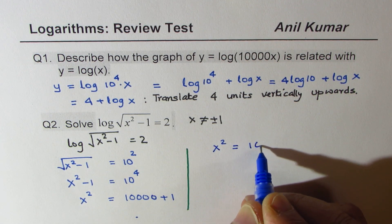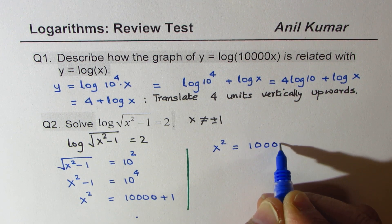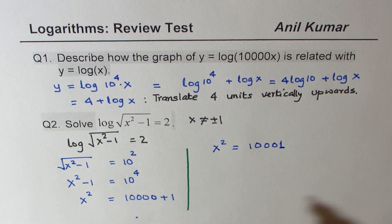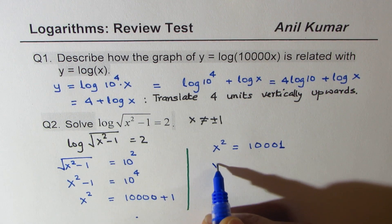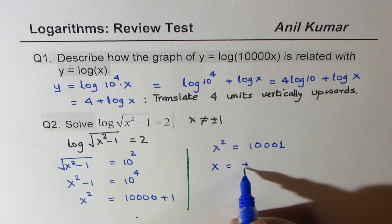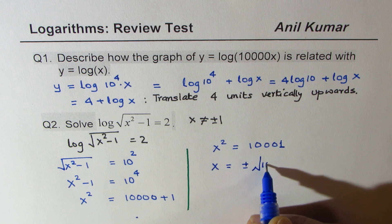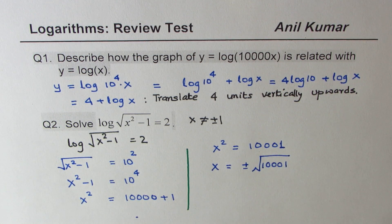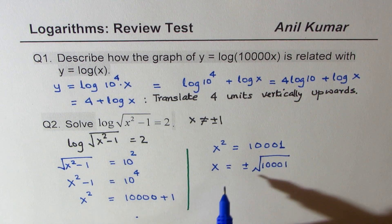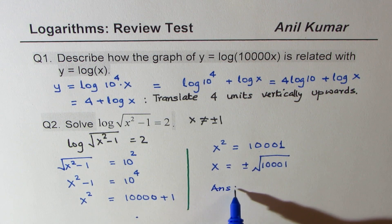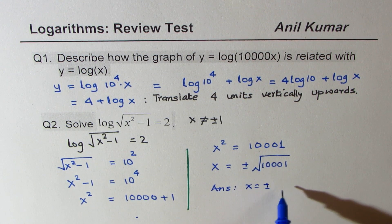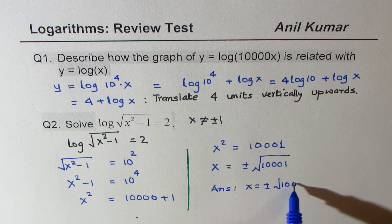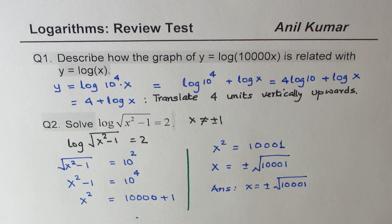So what is x equal to? x equals the square root of all this. So that becomes your answer. There are two solutions to this particular equation, which is x equals plus or minus square root of 10,001.